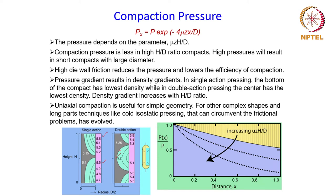This pressure gradient is not desirable because it gives rise to a density gradient. If the green density is not uniform across the compact, it leads to problems during sintering because all the pores close and the compact shrinks. This shrinkage depends on the green density — lower green density means higher shrinkage. Non-uniform green density means non-uniform shrinkage, making it difficult to maintain dimensional tolerance in the sintered product.